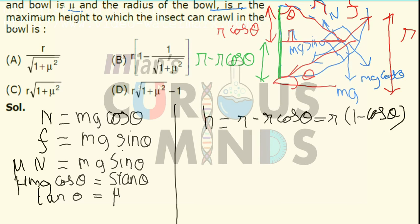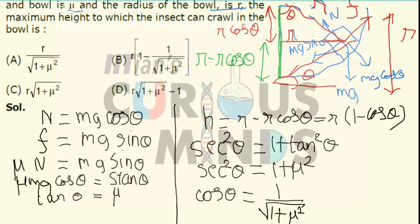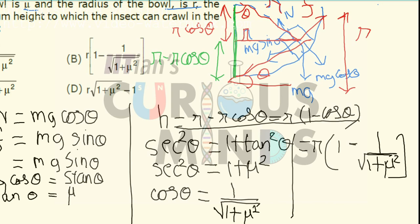Now I have to substitute the values in terms of cosθ. Since tanθ = μ, we use sec²θ = 1 + tan²θ = 1 + μ². So cosθ = 1/√(1 + μ²). Substituting this value, the maximum height will be equal to R times (1 minus 1 divided by root of 1 plus μ squared). This is option number B.